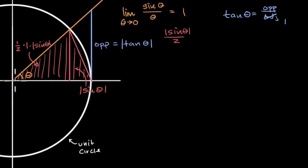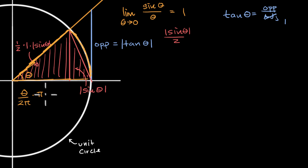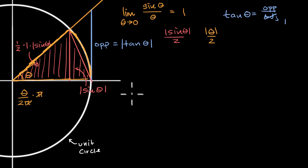Now let's think about the area of this wedge highlighted in yellow. What fraction of the entire circle is this? Going all the way around is two pi radians, so this is theta over two pi of the entire circle. The area of the unit circle is pi times radius squared, which is just pi. So the area of this wedge is |θ| / 2.